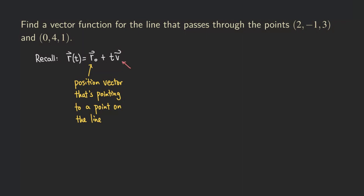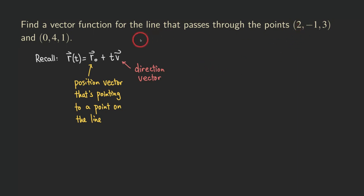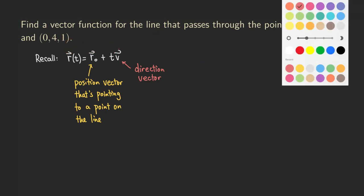Now what about V? T is the parameter, so V in this case would actually be the direction vector. You can think of it as the slope of the line in the plane. Now we know what they are, and we are going to start writing down those two. The position vector pointing to a point on the line is easy — you can choose either point.